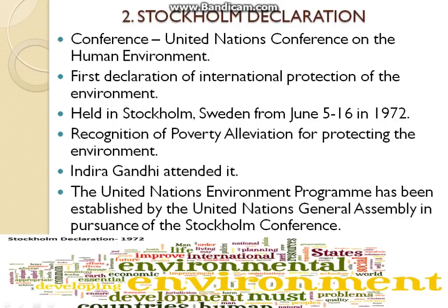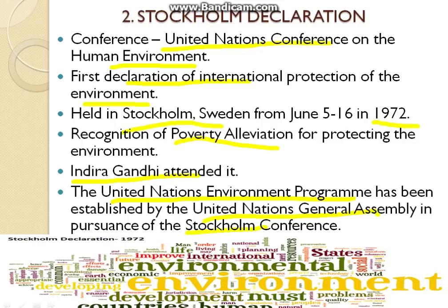The second one is the Stockholm Declaration, which is part of the United Nations Conference on the Human Environment. It paved the way for further understanding of global warming and led to agreements such as the Kyoto Protocol and Paris Agreement. This is the first declaration of international protection of the environment. It was held in Stockholm, Sweden in 1972. One seminal issue that emerged was the recognition of poverty alleviation for protecting the environment. Indira Gandhi attended it, and UNEP was established by the UN General Assembly in pursuance of the Stockholm Conference.